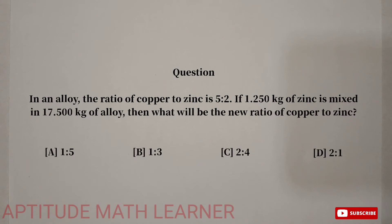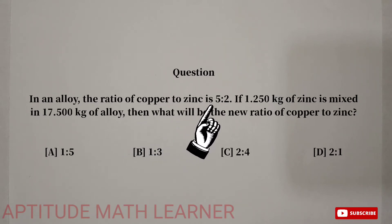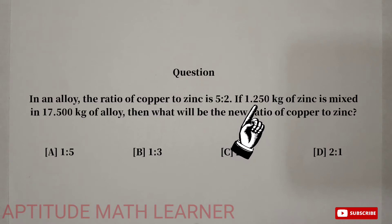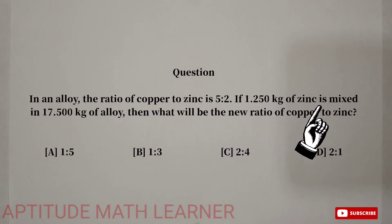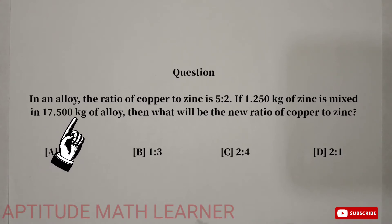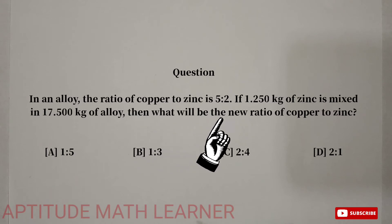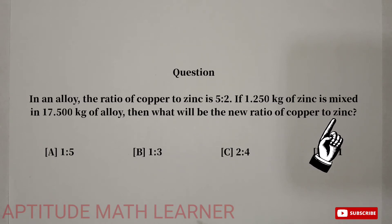Welcome to my YouTube channel Aptitude Math Learner. Today's question is: in an alloy, the ratio of copper and zinc is 5:2. If 1.250 kg of zinc is mixed in 17 kg 500 gram of alloy, then what will be the new ratio of copper and zinc?